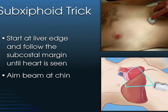Whenever you look at the heart, I think it's helpful to look at it in multiple windows. The first window we think about is a sub-xiphoid view. What you're going to do is follow the liver edge along the subcostal margin until you can see the heart. Once you get around to that sub-xiphoid area, you're going to aim the beam towards the chin of the patient. We're really trying to aim the beam towards the patient's chin, and we still use that liver as our margin.